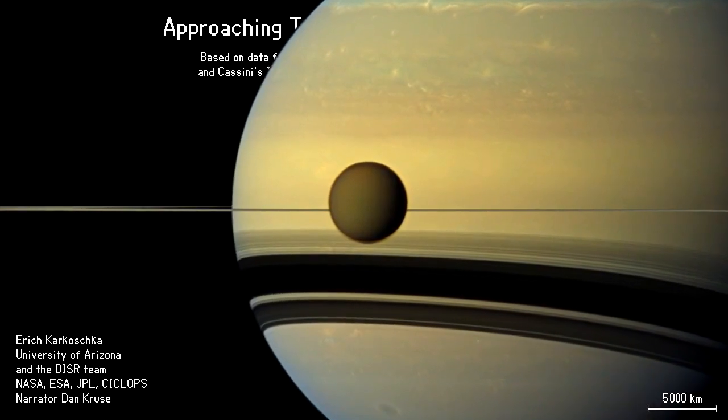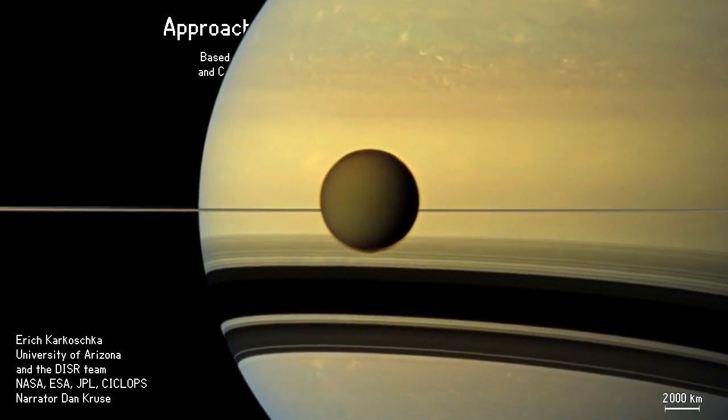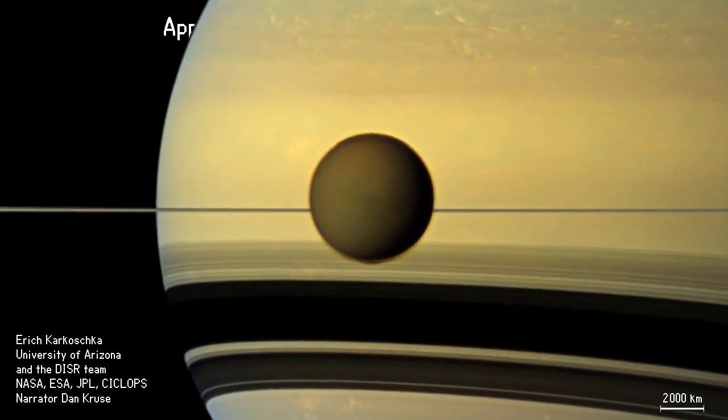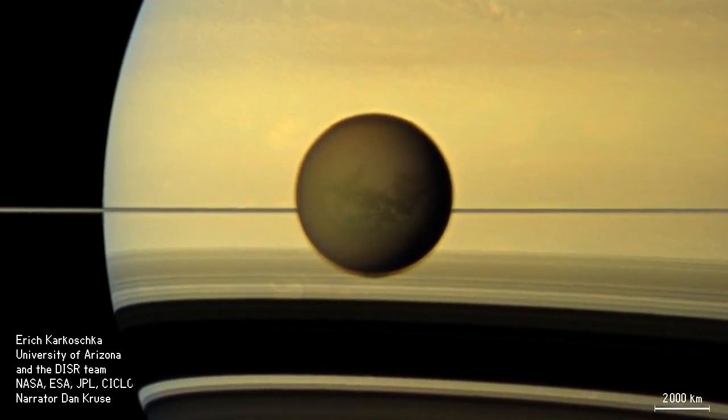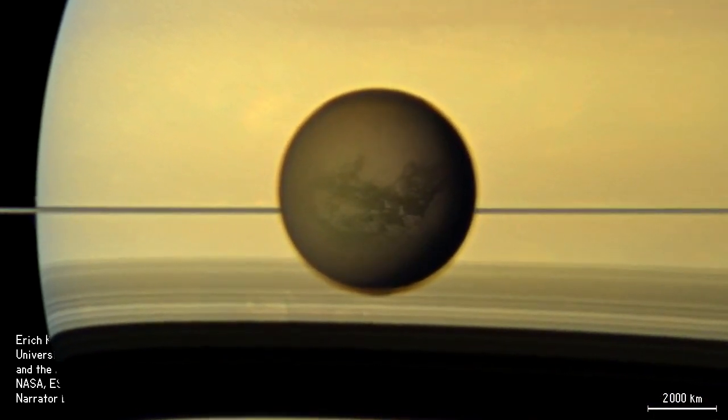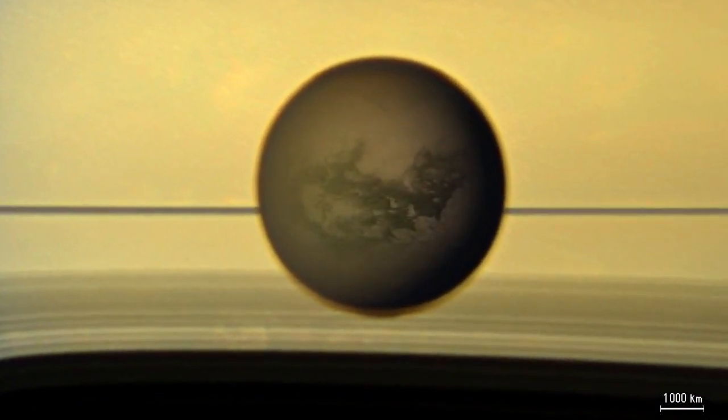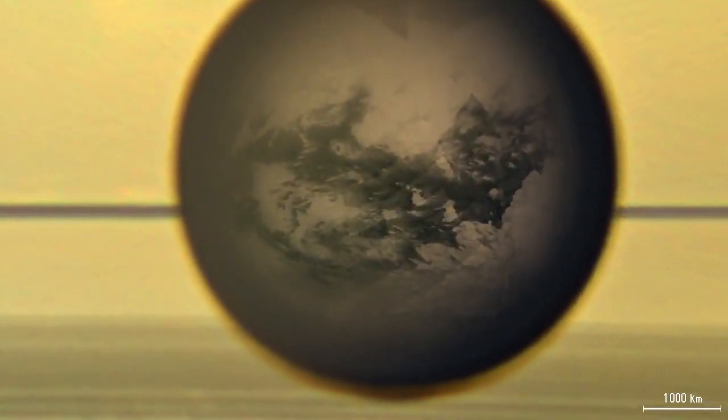Saturn's atmosphere shows a banded structure and a number of storms. We view the edge of Saturn's gigantic ring system. The rings cast major shadows onto Saturn's southern hemisphere. Titan is surrounded by a partially transparent brown haze.